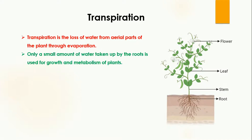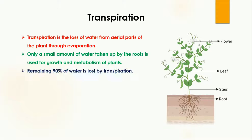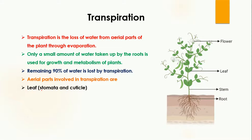Only a small amount of water taken up by the roots is used for the growth and metabolism of the plant, meaning the plant does not require all the water taken up by the roots. About 90 percent of the water is lost by the process of transpiration. The aerial parts involved in transpiration are: the leaf — specifically the stomata and cuticle — the lenticels of the stem, and flowers.